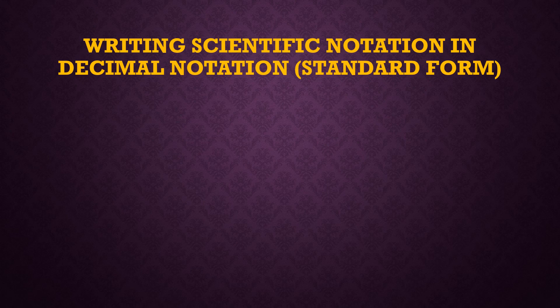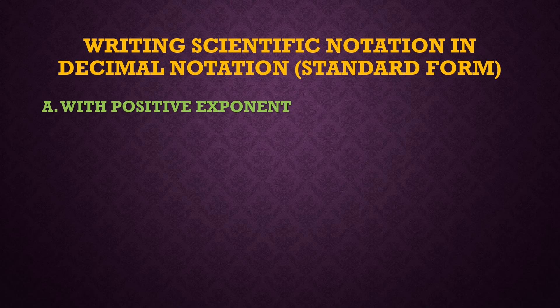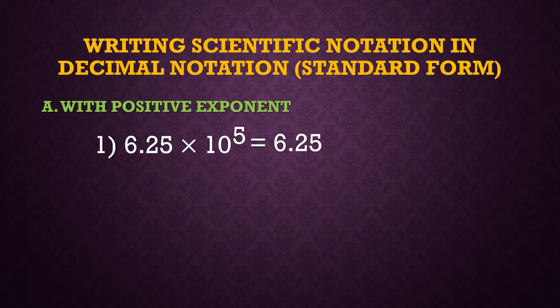Now we are going to learn how to write scientific notation in decimal notation, or standard form. If we have a positive exponent, we do the reverse: instead of moving to the left, we move to the right. So for 6.25 times 10 raised to 5, we move the decimal point 5 places to the right.